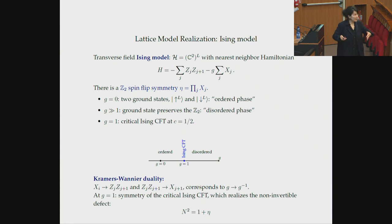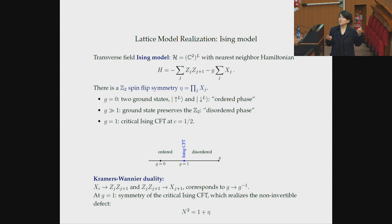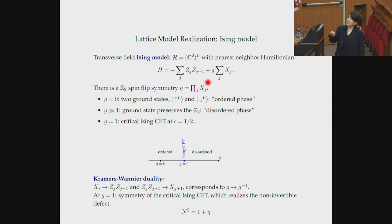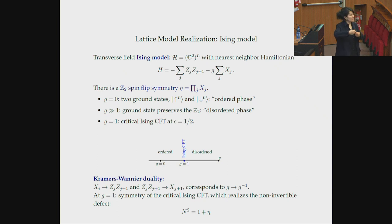There's a very concrete way of thinking about this, which is the Ising spin chain. It's a very simple Hamiltonian model in quantum mechanics — a spin model with a Hilbert space C2 and L sites, so spin-half up and down spins at L sites, with a nearest neighbor Hamiltonian. Z and X are just Pauli matrices. There's a nearest neighbor Z-Z interaction and then a coupling strength G and then X. This is a transverse field Ising model, and it realizes precisely this transition.